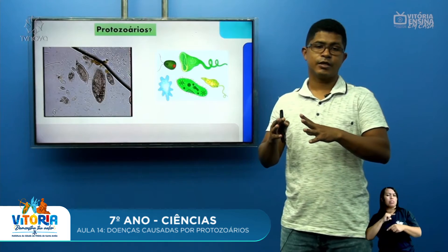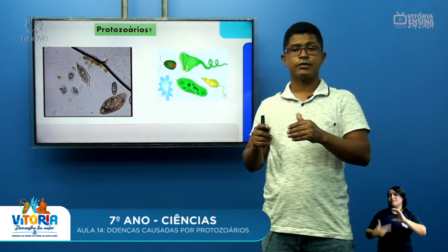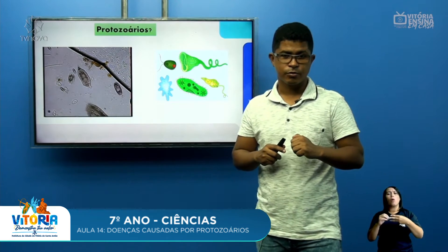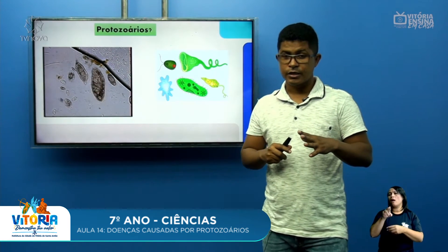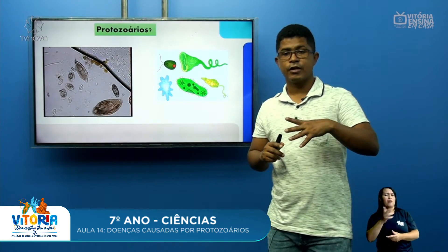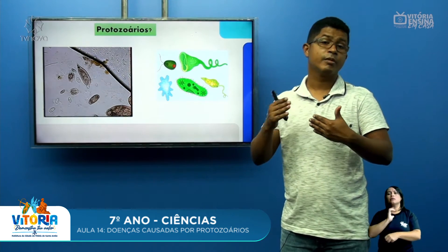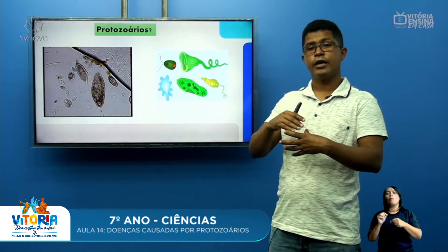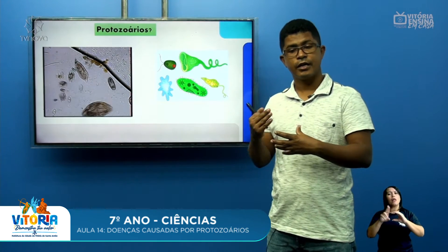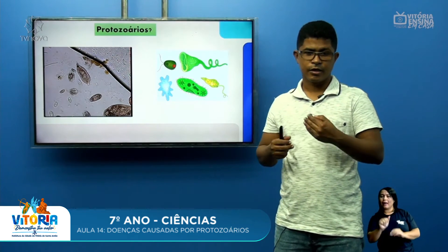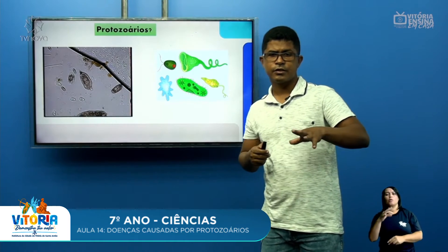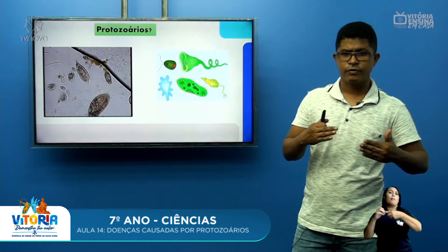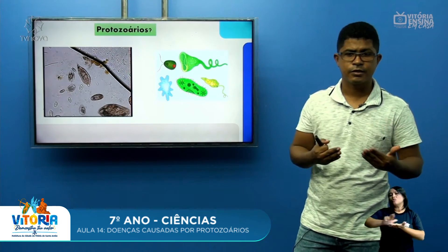Eles têm características bem específicas: são células eucariontes, como já falamos na aula do sexto ano. Esses seres eucariontes possuem em sua célula uma membrana plasmática e o seu núcleo é recoberto por uma membrana chamada carioteca. Existem diversas formas de protozoários e vivem nos mais diversos ambientes.